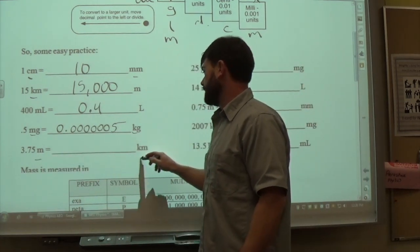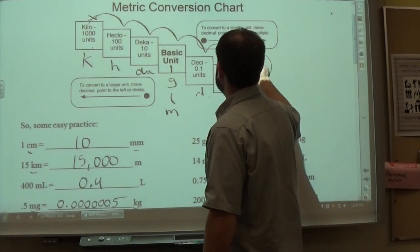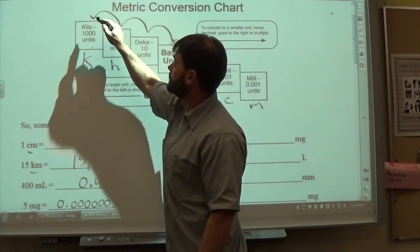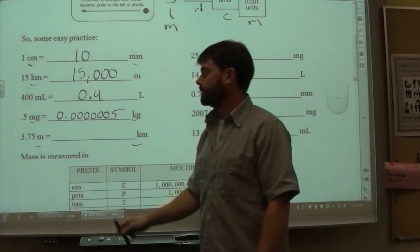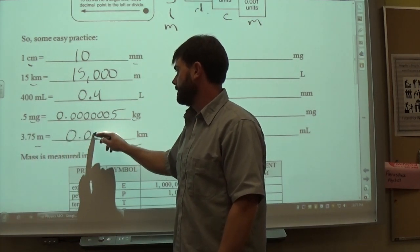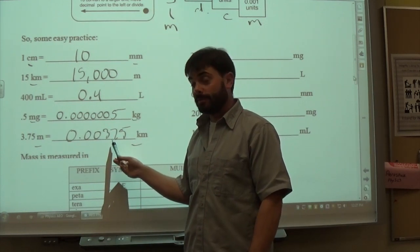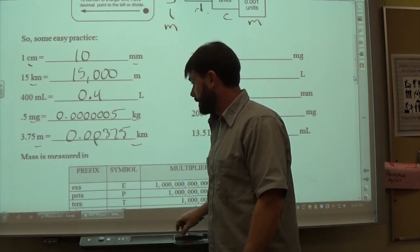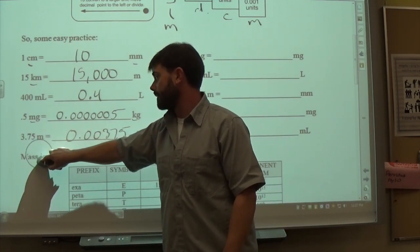Next, converting 3.75 from the base unit to kilo. Starting at the base and going to kilo is 3 steps to the left, making the value smaller. The decimal was originally between the 3 and the 7. Moving it back 3 spaces gives 0.00375 kilometers.